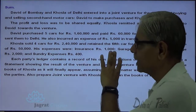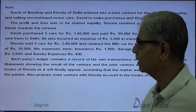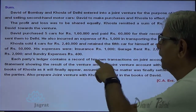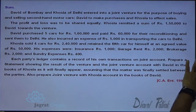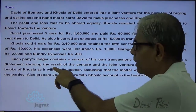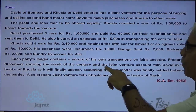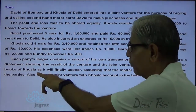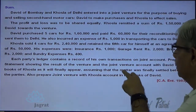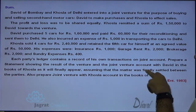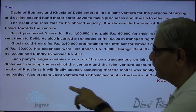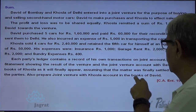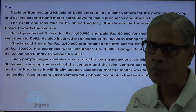Khosla sold four cars for rupees 2 lakh 40,000 and retained the fifth car for himself at an agreed value of 50,000. His expenses for insurance, garage rent, brokerage, and sundry expenses are given. Each party's ledger contains a record of his own transactions in the joint venture account. We need to prepare a statement showing the results of the joint venture and the joint venture account with David in the books of Khosla, assuming the matter was finally settled between the partners. Also prepare joint venture account with Khosla in the books of David.